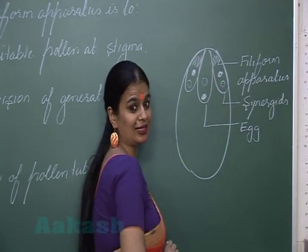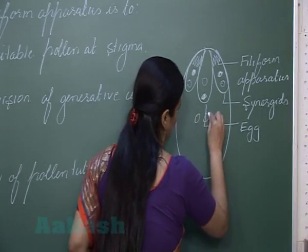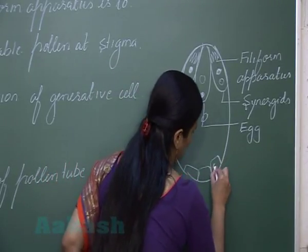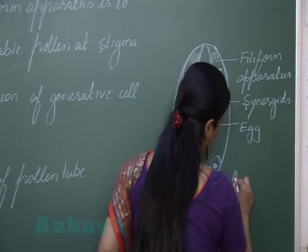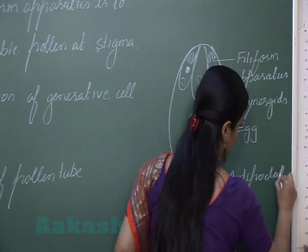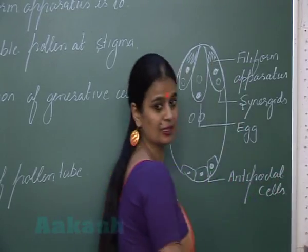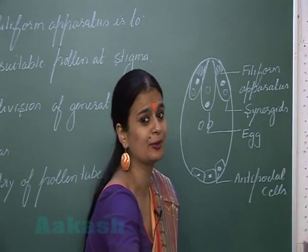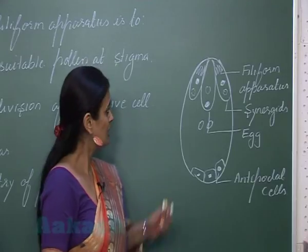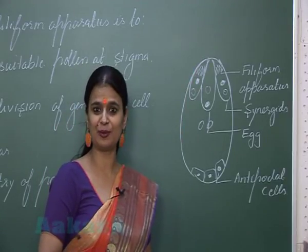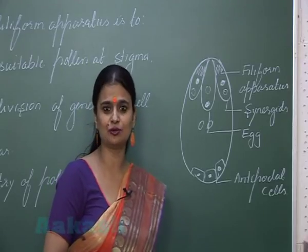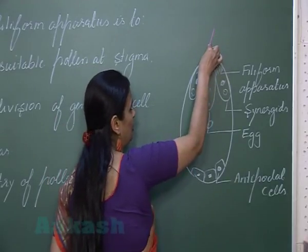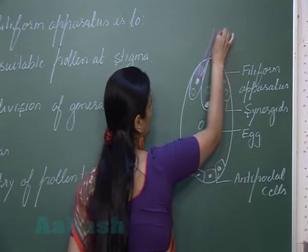The largest cell of the embryo sac is the central cell, in which there is presence of two polar nuclei. Towards the chalazal end there are three cells called antipodal cells. The filiform apparatus secretes certain chemical substances which guide the entry of the pollen tube inside the embryo sac, specifically into the synergid.